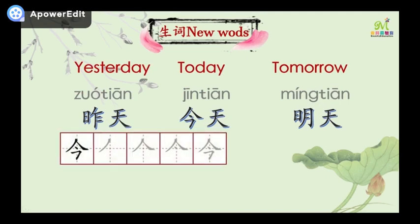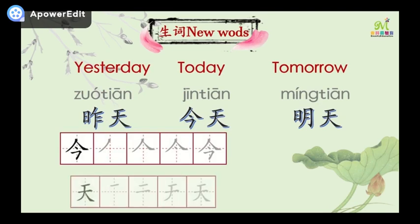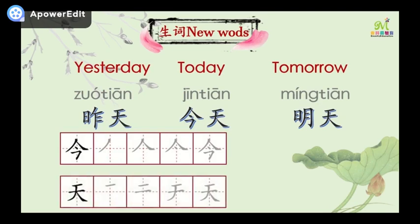Okay, now let's learn how to write 今 and 天. Follow me. 今：一，二，三，四. It's so easy. 天：一，二，三，四. 今天 — today.